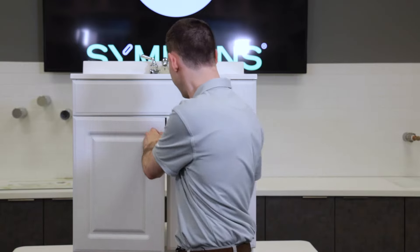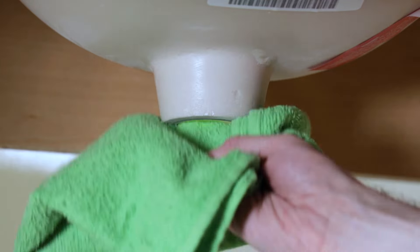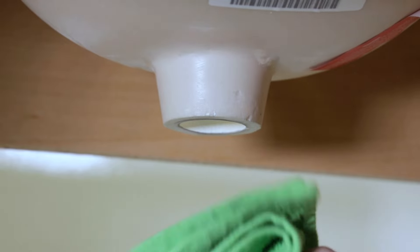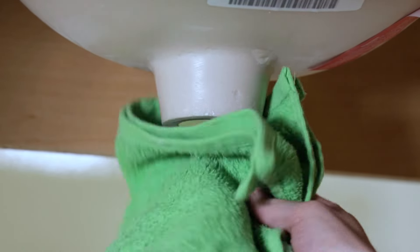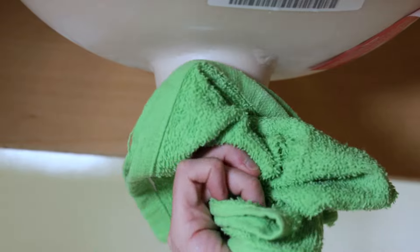Before we even get into assembling the pop-up, first we need to prepare the sink. Now you'll either be installing this on a new sink or you'll be using it on an existing sink to replace an old pop-up from a previous faucet. If you're installing it on a new sink, clean up the bottom of the sink outlet with a rag. It may look clean but oftentimes there's dust or debris on the outlet from when the sink was cast or molded.